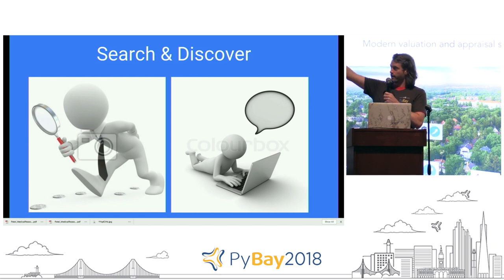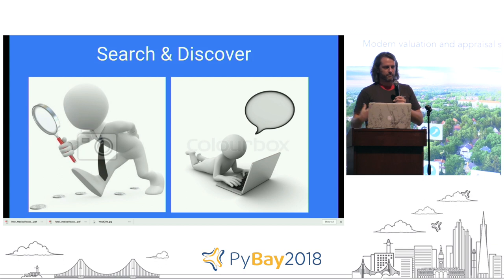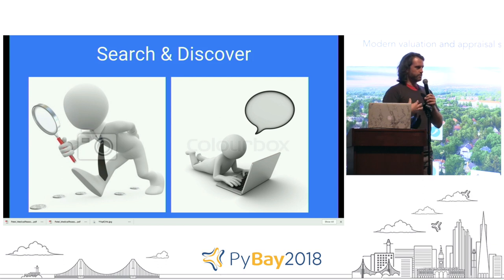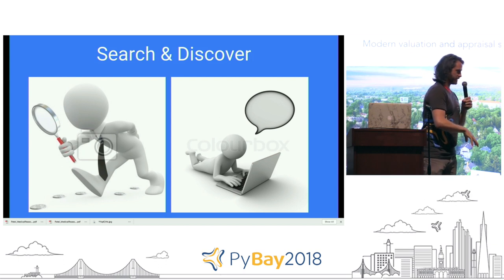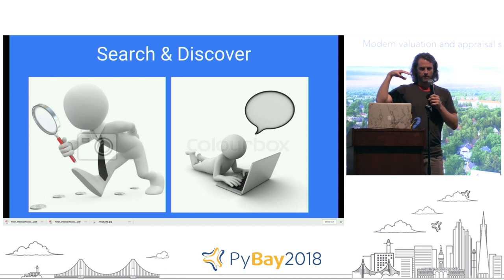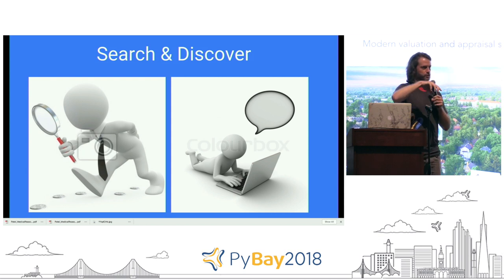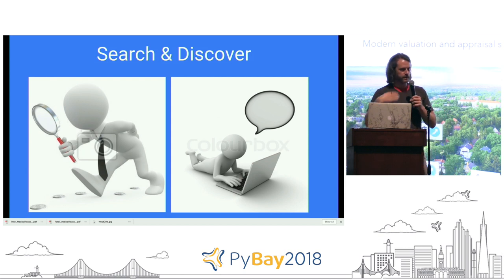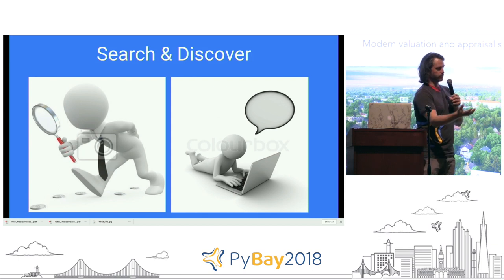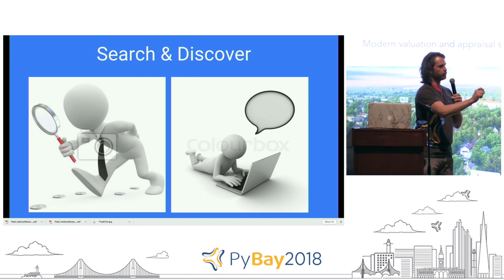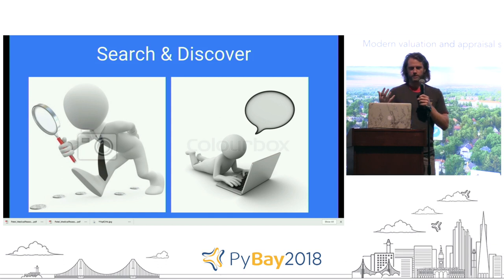Whether you do that in person or on the computer, finding the right people is really difficult. This conference is an example of finding good people — you come to this talk because you're looking for people speaking about quick things. You go to the AI talk for another reason. If you go to meetups, if you host those meetups, once you're there and find the right person, there are different ways to approach them.